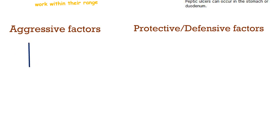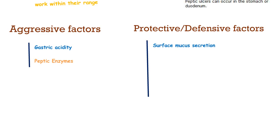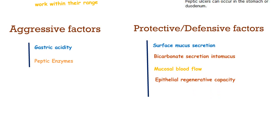The aggressive factors include gastric acidity and peptic enzymes, while the protective or defensive factors include surface mucous secretions, bicarbonate secretion into mucous, mucosal blood flow, epithelial regeneration capacity, and elaboration of prostaglandins.